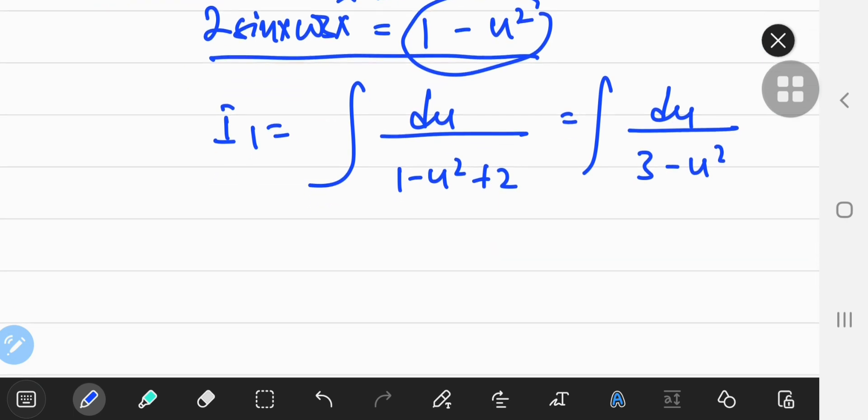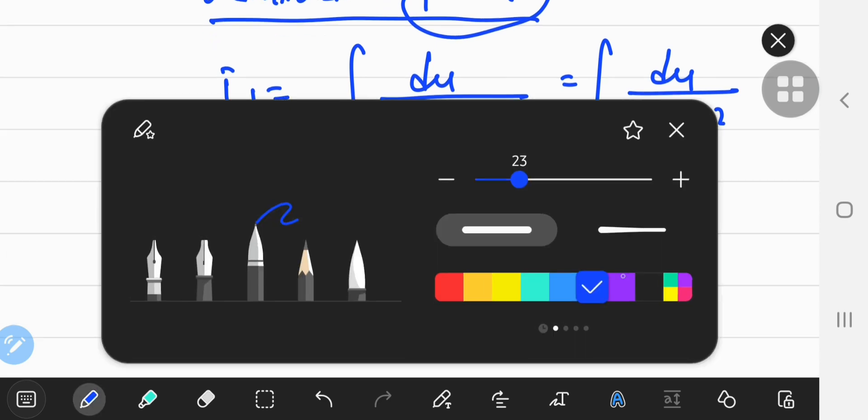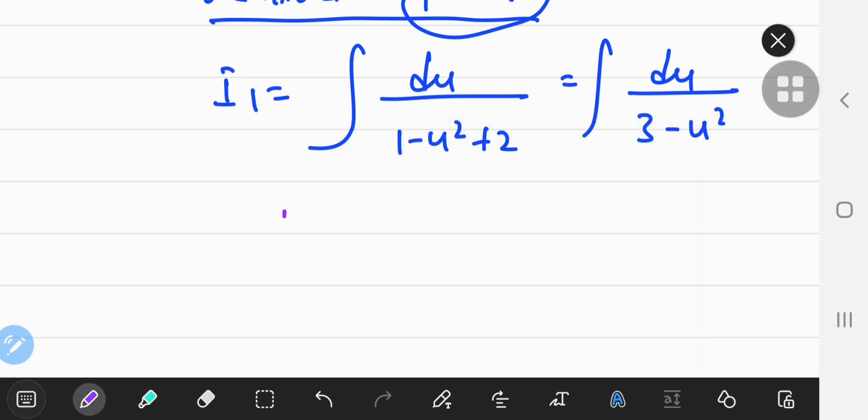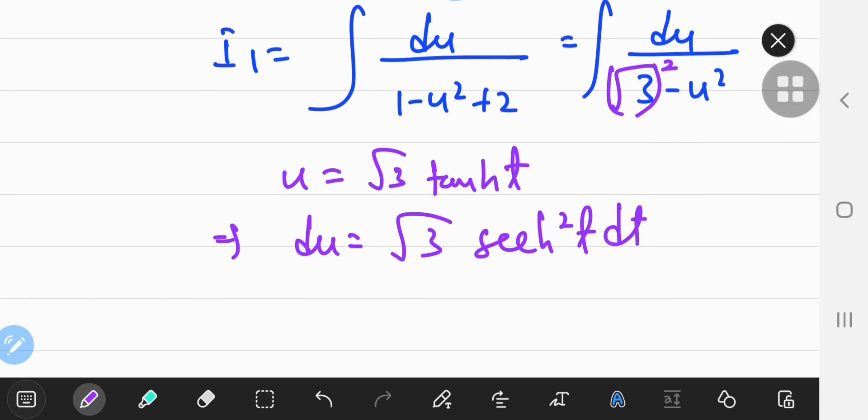So this is going to reduce to the differential of u by 3 minus u squared. Now if you want to solve this, you can use a hyperbolic substitution. So what I'm going to do is, I'm going to define a variable t as u equals, this is square root 3 squared, so u equals the square root 3 times the tangent hyperbolic t.